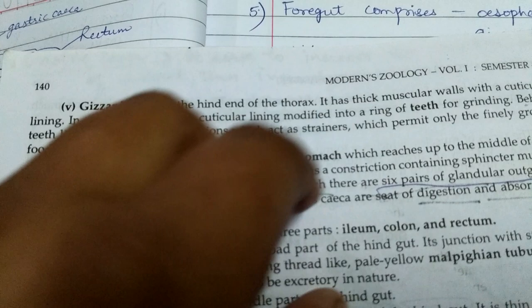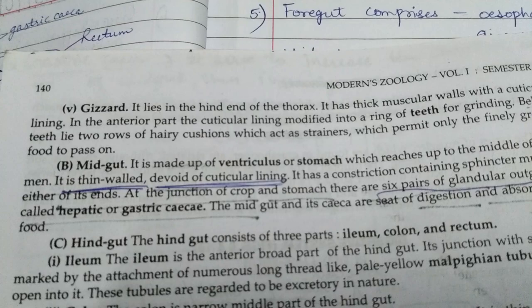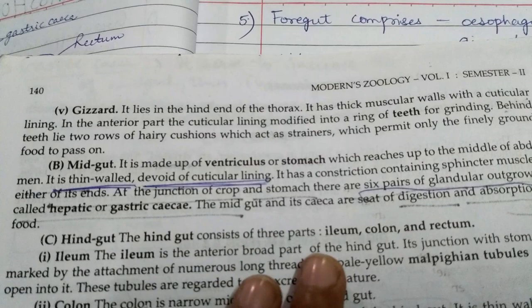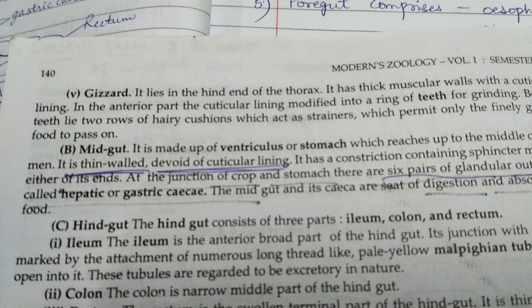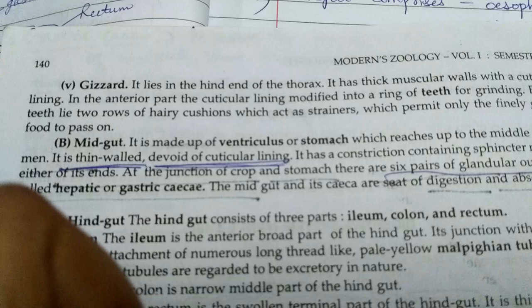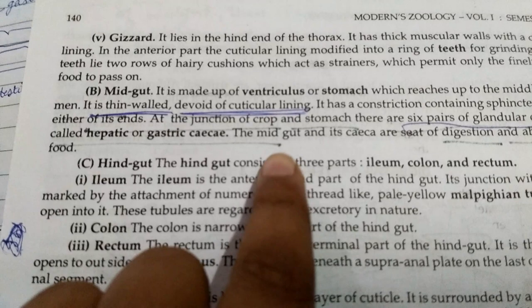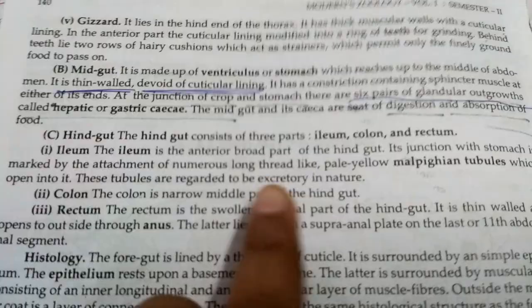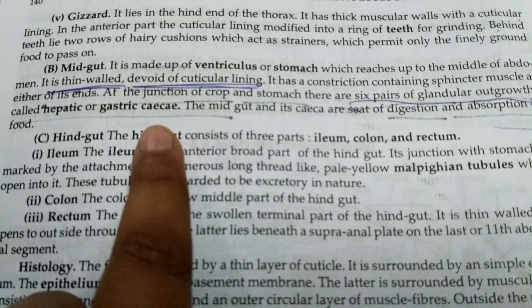The posterior part of the gizzard acts as strainers to permit food to pass on to the midgut. The anterior part crushes the food, and the posterior part filters it. Midgut, also known as ventricle or stomach, reaches up to the middle of the abdomen. It is a thin-walled structure devoid of cuticular lining, so it helps in digestion of food. It has six pairs of glandular outgrowths called hepatic or gastric ceca, which act like the liver of man, secreting digestive enzymes.